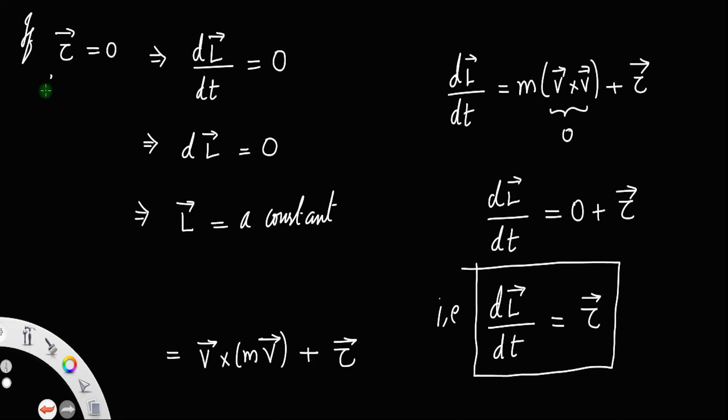So if you connect these two, you will see that in the absence of an external torque or if the torque is zero, the angular momentum of that body remains constant. And this is called the law of conservation of angular momentum.